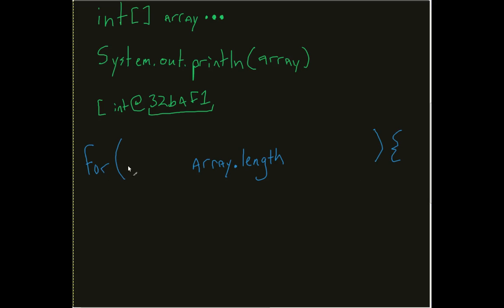And my structure will be something very basic like this: int i equals zero, i less than array dot length, i plus plus. I'm going to actually clean this up for a second. Let me write this. That didn't work out as I was hoping. There we are.